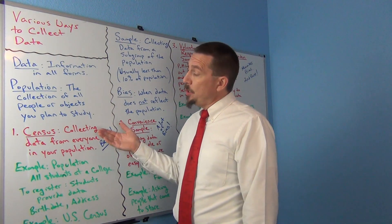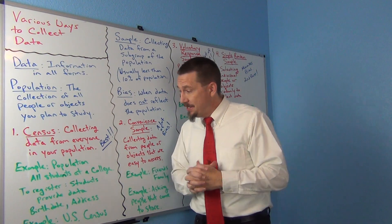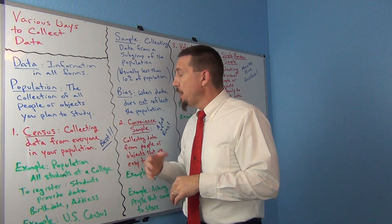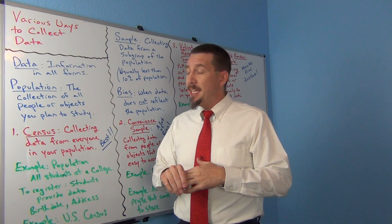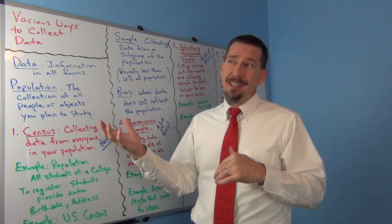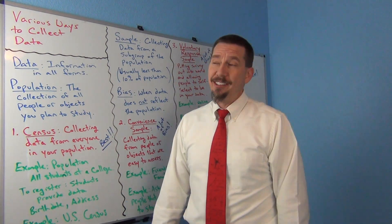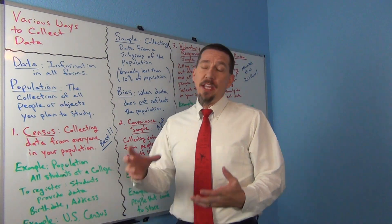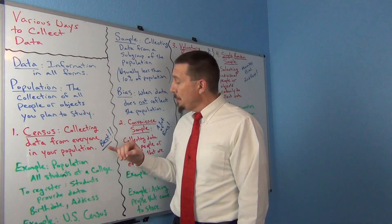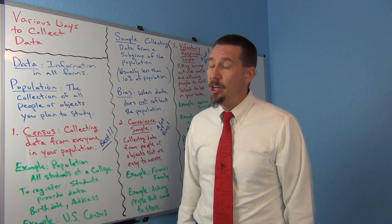One of the first methods I'm going to talk about is called a census. Most of you have probably heard that word. A census means you're trying to collect data from everyone in your population. Not all censuses succeed — they don't always get everybody — but they sure try. Even if they don't get everybody, they still get a very high percentage of the population. A census is the best method if you really want data that reflects your population.